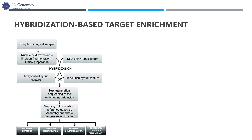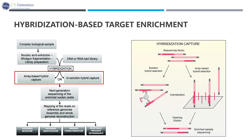Capture can be realized through the hybridization of fragmented DNA with baits complementary to regions of interest, either on a microarray chip or free in solution. In-solution hybridization capture can be scalable and easily automatable, and rules out the shortcomings of microarray hybridization, such as high cost, limitations to the number of samples, and large sample requirements. Thus, solution-based hybridization becomes the mainstream approach of capture-based enrichment for NGS.